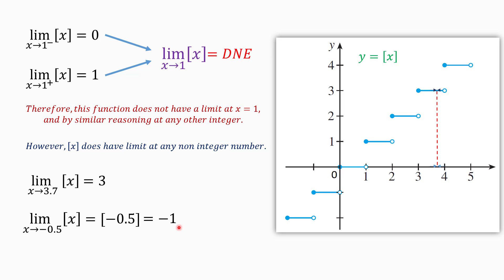We can also find this limit by looking at the graph of the function. If we get closer and closer to negative 0.5 on the graph, the y-values of the function are constantly negative 1 whether we approach from the left or from the right. So the limit equals negative 1. From this discussion we can conclude that the greatest integer function does not have a limit at any integer number, but does have a limit at any non-integer number.